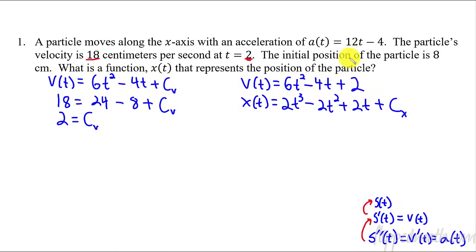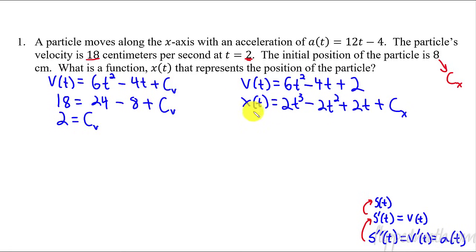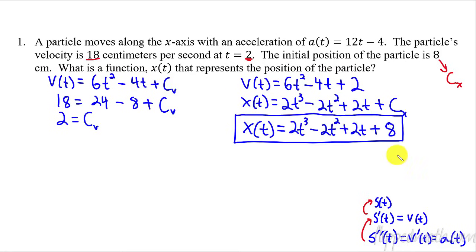It says the initial position of the particle is 8 centimeters. Initial means at time 0. So this is actually our c, our constant, for the position function. If it's initial position, the time is 0, so all the terms with t become 0, so this equals 8, and it equals c. So that leads us to our answer — this is the position function. We took the antiderivative of acceleration, found the velocity, and then worked our way all the way up to the position function.